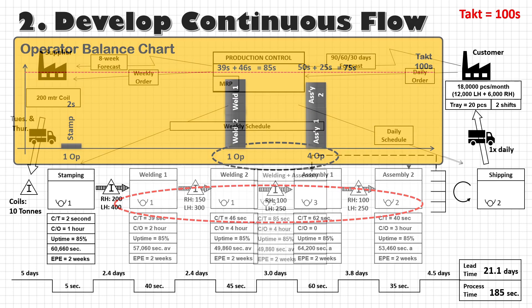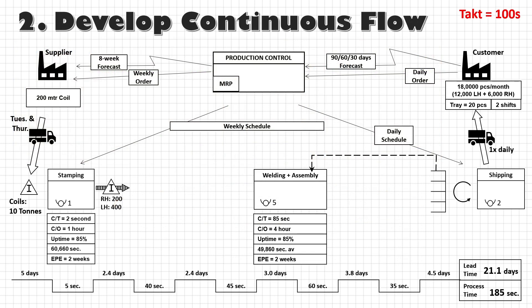So using steps 1 and 2, my value stream can become something like this. We have a supermarket in the finished goods section. The customer is picking material in multiples of 20, which is my tray size, and we are releasing the kanbans in sets of 20 to the welding and assembly process section. By doing this alone, we have reduced a lot of inventory. We should update the timeline also, but let us ignore the timeline at this moment.